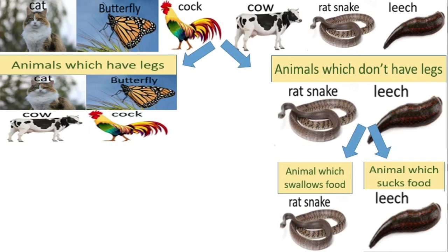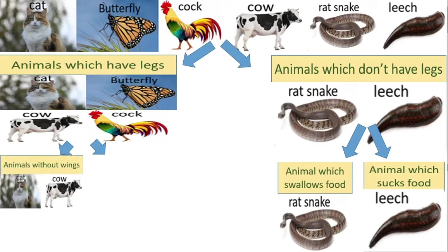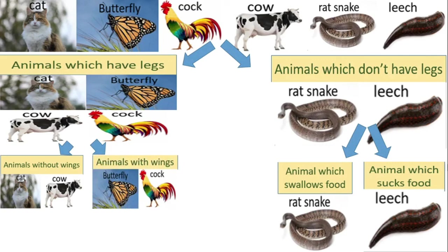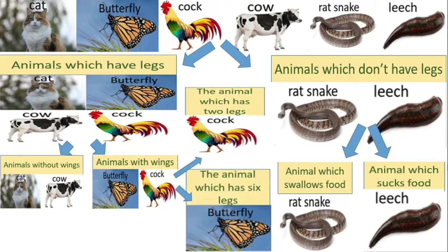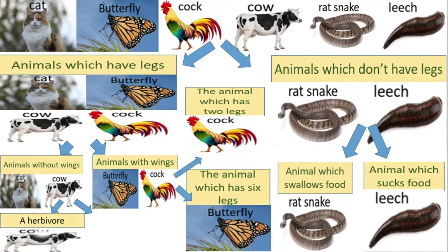Cat, butterfly, cow and cock can be further categorized. Cat and cow go under animals without wings, and butterfly and cock go under animals with wings. Cock goes under the animal which has two legs, and butterfly can go under the animal which has six legs. Out of cow and cat, cow is a herbivorous animal, and cat is an omnivorous animal.